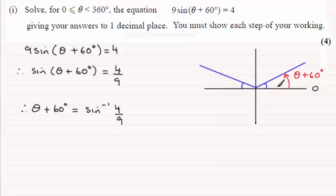Starting from here again, we turn now to the next blue line. And that's a possible solution for theta plus 60 degrees.